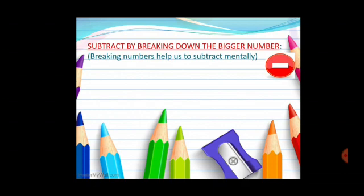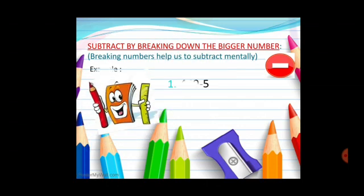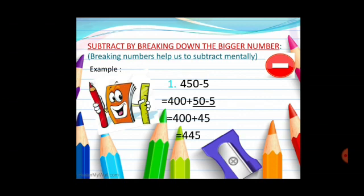Next is subtract by breaking down the bigger number. Breaking numbers help us to subtract mentally. Let's take one example, 450 minus 5. Here we will break 450 into 400 plus 50. Now we will subtract the underlined number, 400 plus 45. Add both the numbers, answer will be 445.